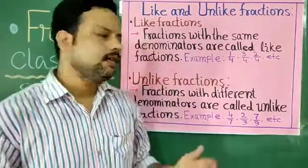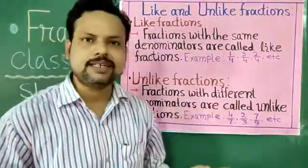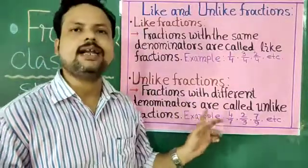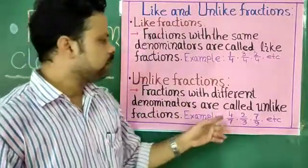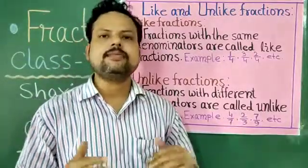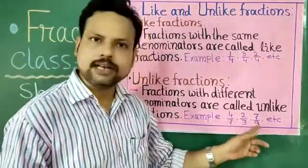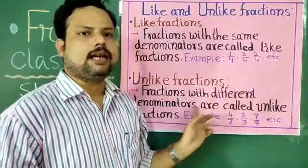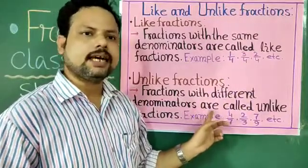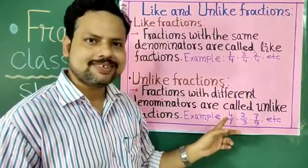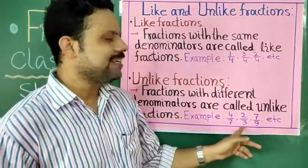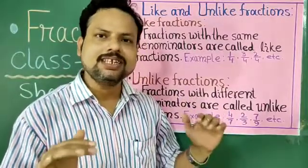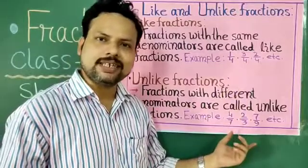Just the opposite — unlike fractions. In unlike fractions, different denominators are there. Examples: 4 by 7, 2 by 3, 7 by 9 — everywhere the denominator is different. So in unlike fractions, denominators will not be the same. Forget about numerators — always check the denominators.